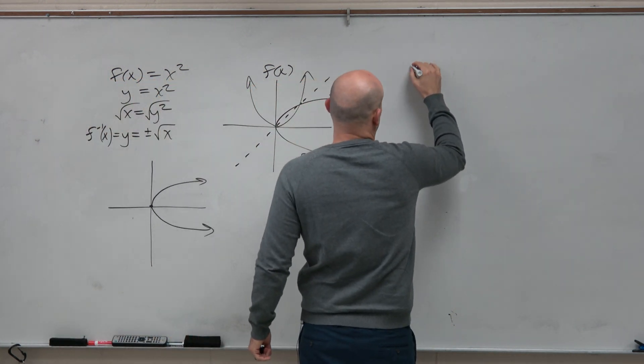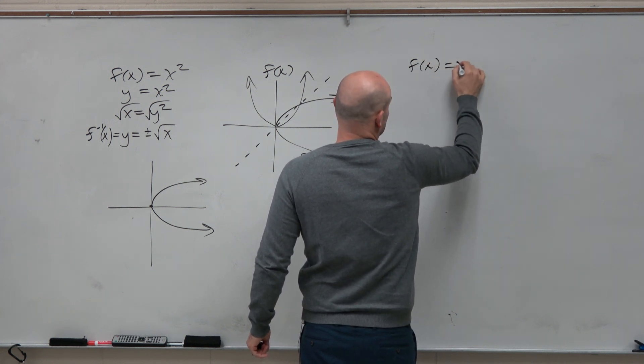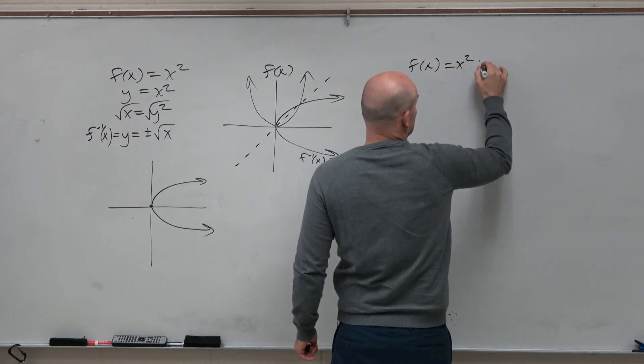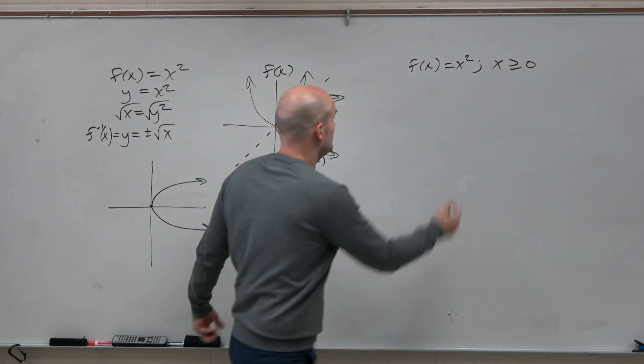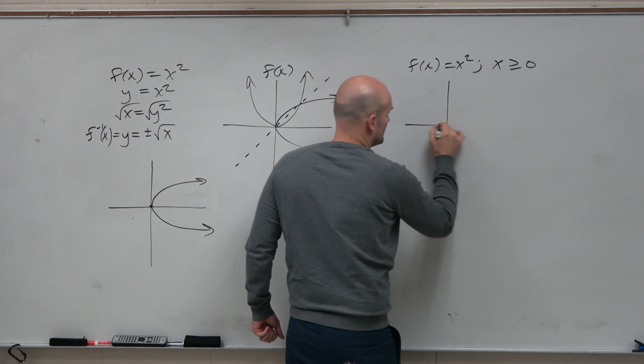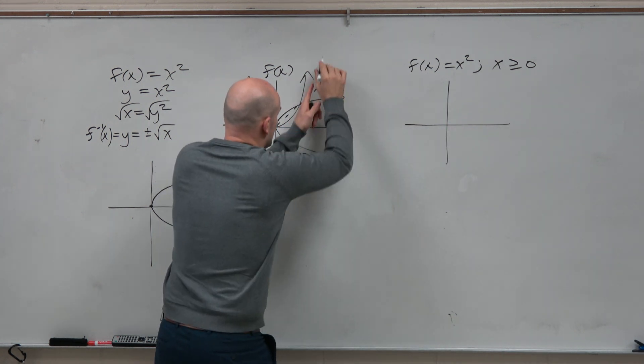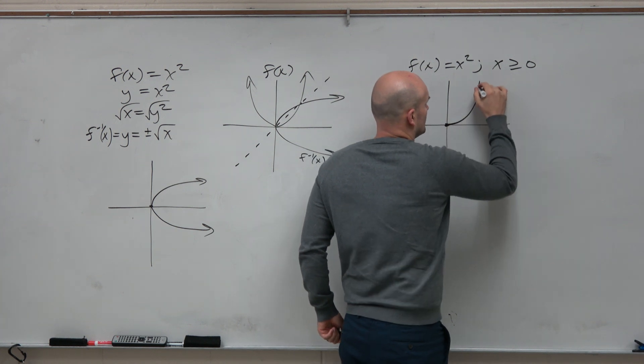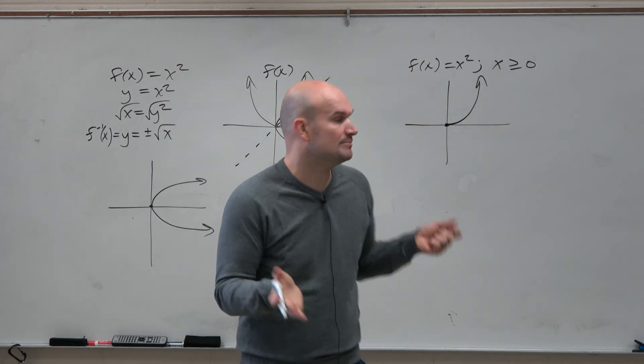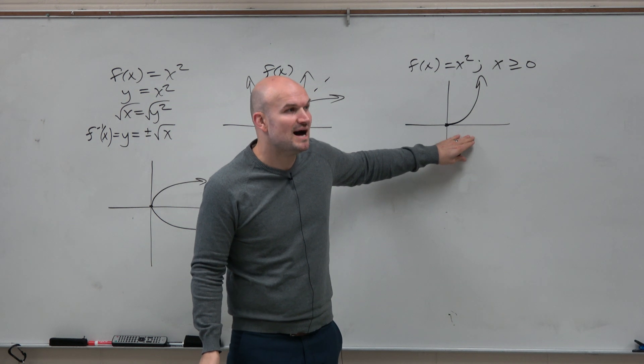So we got around this by saying, well, what about if we take the exact same function, but now we just put a restriction on the domain, saying x has to be greater than or equal to 0? So now, when we go ahead and graph the function, instead of graphing to the right and to the left, we're only going to graph x values that are positive. That's what the restriction on the domain does. It just makes this positive.